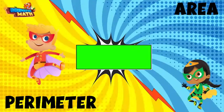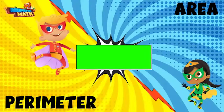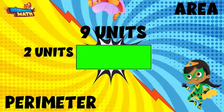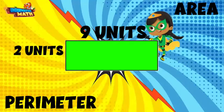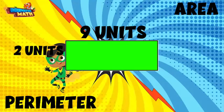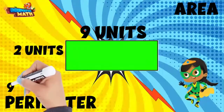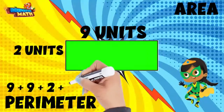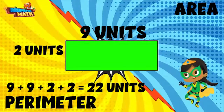See if you can get this one. Oh no, Villain Vance left a hard problem — I think we can beat him! Perimeter first. To calculate perimeter, we add together all of the side lengths. Two side lengths are nine units and two side lengths are two units. Nine plus nine is 18, plus two is 20, plus two is 22. The perimeter must be 22 units.